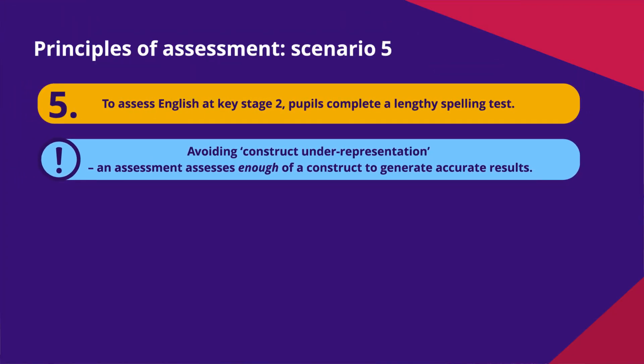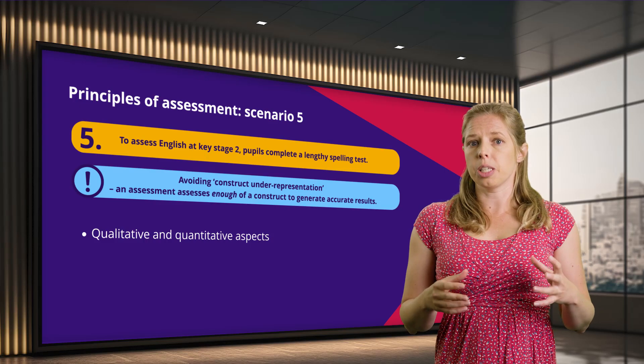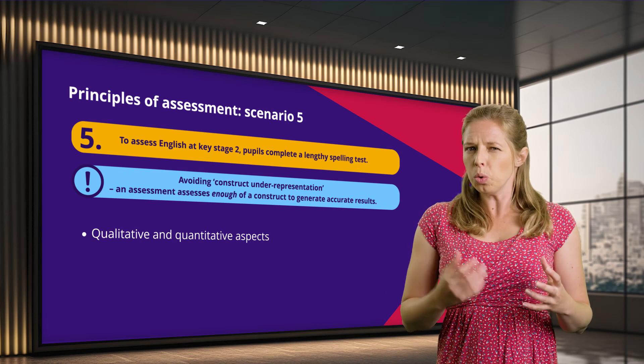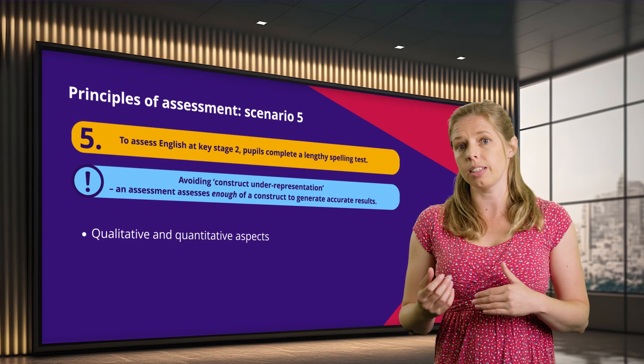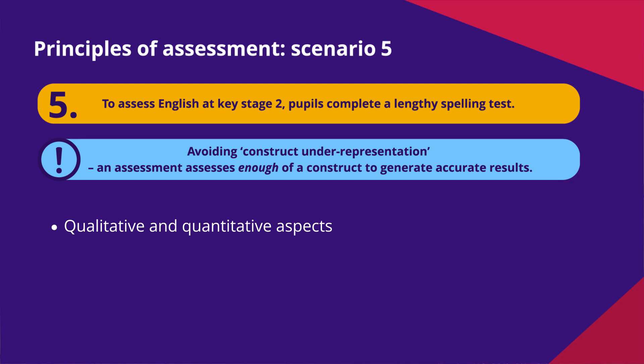In this scenario we have a problem with construct underrepresentation. The construct is the thing you're fundamentally trying to assess. If your assessment is about English ability but it's only looking at spelling, there are all sorts of elements of English not being measured and you're only capturing one part of the skill set. We need to make sure assessments sample all the skills, knowledge and understanding related to a subject. At AQA we use assessment objectives to outline the key skills expected of students and ensure the right weighting of those objectives, as well as sampling the full specification across the question paper.